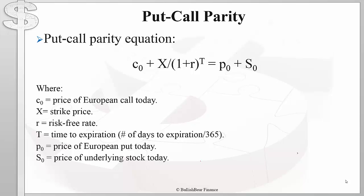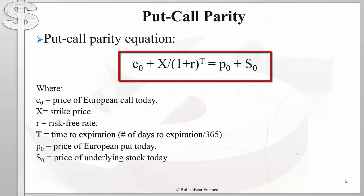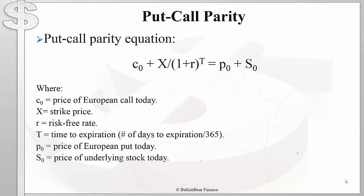The put-call parity equation is one of the most fundamental and important results from option theory. In this equation, C₀ is the price of a European call option today, X is the strike price of that option, R is the risk-free rate, and T is the time to expiration of the option.